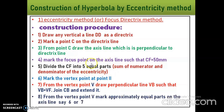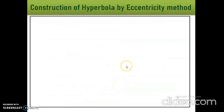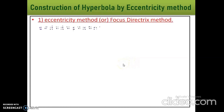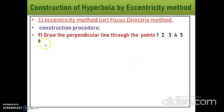Eighth point: from the vertex point V, mark approximately equal parts on the axis line — say 6 or 7 as you wish. Ninth point: draw perpendicular lines through points 1, 2, 3, 4, 5, 6. These perpendicular lines will meet the CB line at points 1 dash, 2 dash, 3 dash, and so on up to 6 dash.